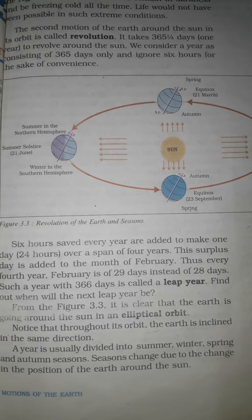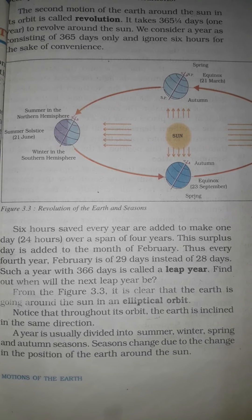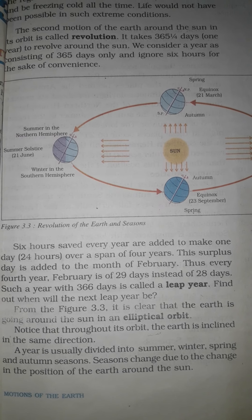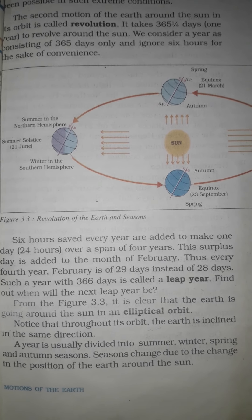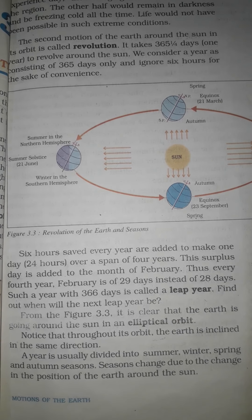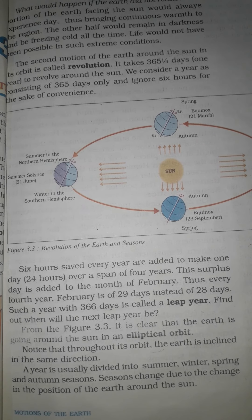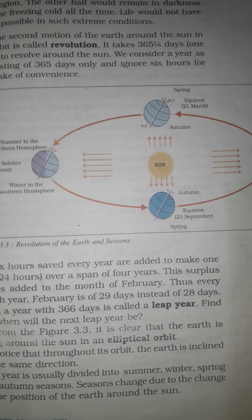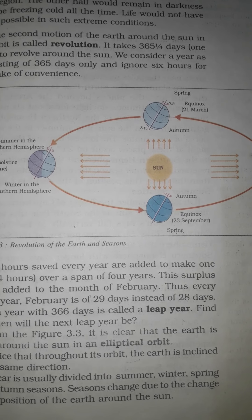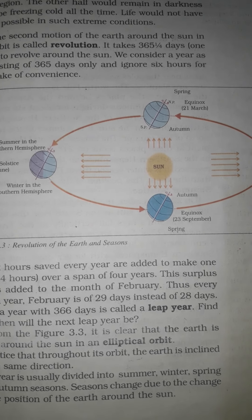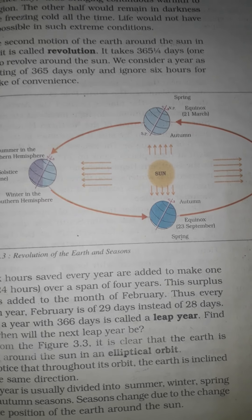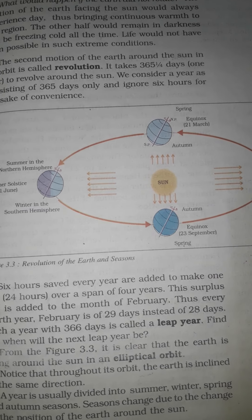The year is usually divided into summer, winter, spring, and autumn seasons. Seasons change due to the change in the position of the earth around the sun. This is up to page number 19. In the next class we will discuss the next topic. Please watch the video and read your lesson carefully before the doubt session, and ask valid questions.